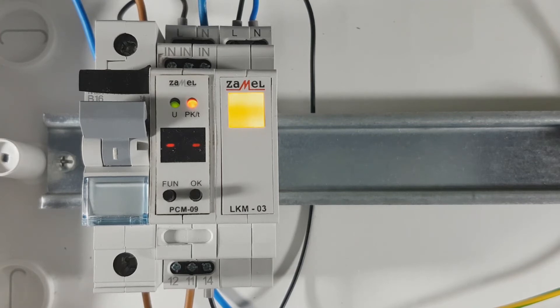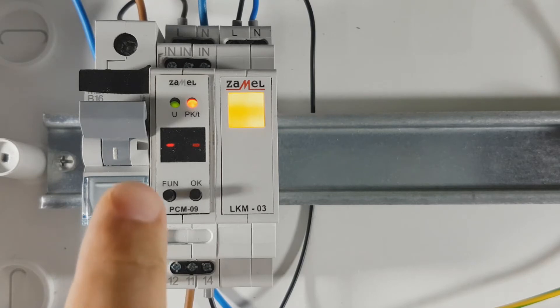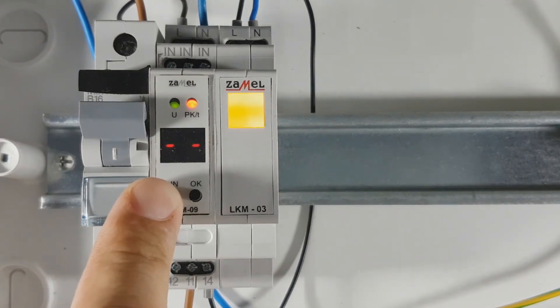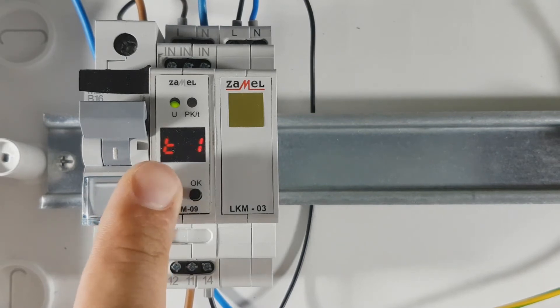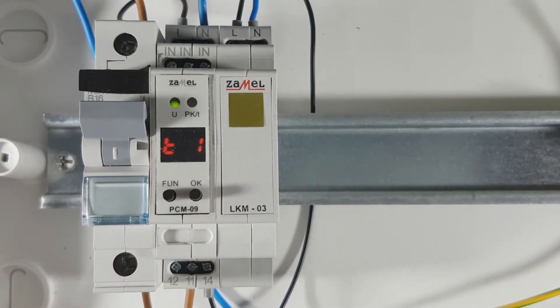Press the function button and hold for 3 seconds. Operating mode selection will be displayed. The following next press moves to settings of the first timer, T1.